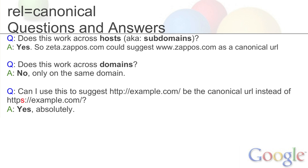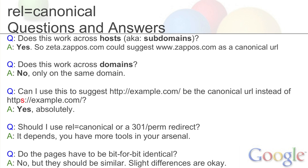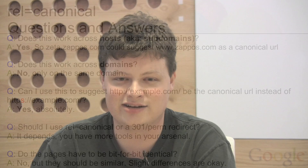Should you use 301s or should you use rel equals canonical? It's totally up to you — this is really just another tool in your arsenal. And the last question we get a lot is: do these pages have to be identical? One of the problems is if Google comes along to the same page two different times, we may see like a date on the page — 'last updated on such-and-such' — and we might notice that they're slightly different. We recognize that we can't expect these pages to always be completely identical, but we do expect them to be very similar. Slight differences are totally okay.